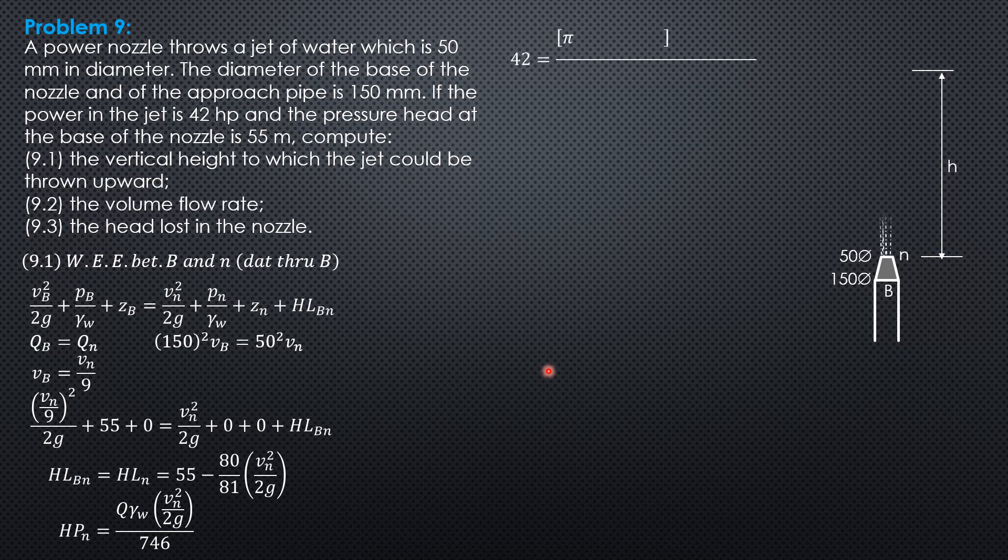So 42 equals pi times 0.025 squared vn times 9810 times vn squared over 2g over 746. Solving for vn we'll get vn equals 31.72 meters per second.